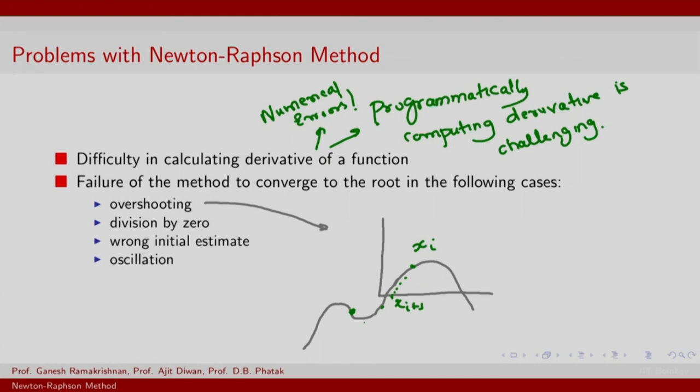There are also other possibilities. Your f' itself might become very small, in which case you land up dividing by 0. The division by 0 is when the derivative f'(x) is close to 0.